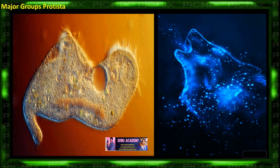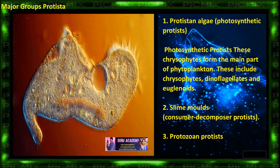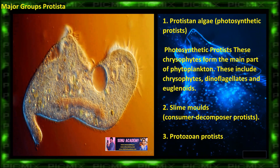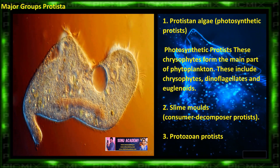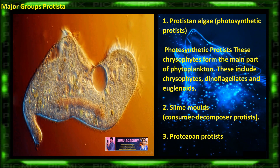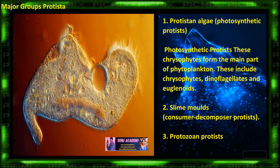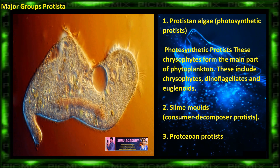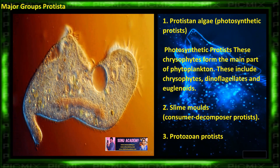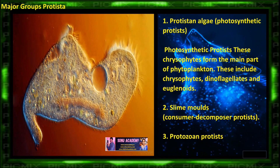Now, let us discuss the major groups of protista. Protista algae, photosynthetic protista — these form the main parts of phytoplankton. These include cryptophytes, dinoflagellates and euglenoids, slime molds, protozoans, etc.